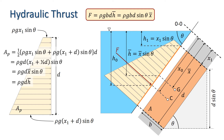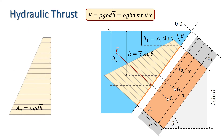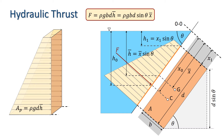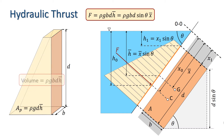This gives rise to the notion of the pressure prism. We imagine a prism of pressure acting over our area A. The volume of this pressure prism is rho G B D times H bar — that is, its volume equals the magnitude of the hydraulic thrust. It thus provides an alternative method for calculating the magnitude of the hydraulic thrust without recourse to the formula.